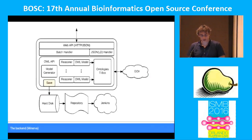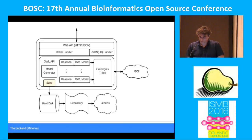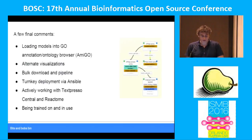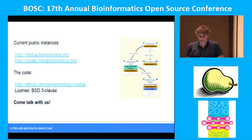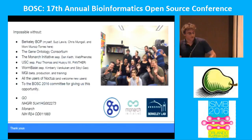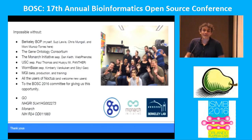The backend is Minerva, written in Java with the OWLAPI. We have reasoners in there — come talk to me and we can discuss more. Right now we're saving files on the file system but looking to move to a graph or triple store very soon. The pipeline feeds into AmiGO. We also have alternate visualizations, turnkey deployment by Ansible, and we're working with Textpresso — this is being trained on and used right now, so it's something that's in the wild and people are using it. Come and talk to us about it. Thank you to the Gene Ontology Consortium — Suzi Lewis, Chris Mungall, and Moni are here if you want to talk. Thank you.